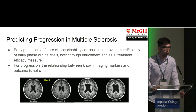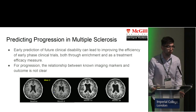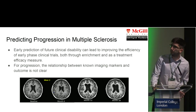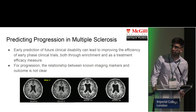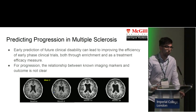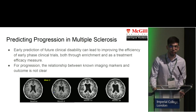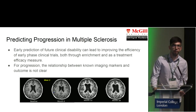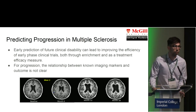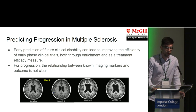Multiple sclerosis is a neurological disease of the central nervous system that affects the myelin sheath of the axons, and this can be seen in MRI scans by the appearance of lesions and brain atrophy.